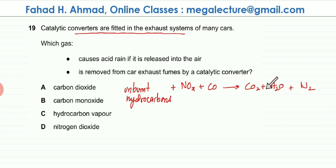All these gases are converted into less harmful products: carbon dioxide, water, and nitrogen oxides are converted back into nitrogen. This is the role of the catalytic converter, which is made out of platinum or palladium catalyst.